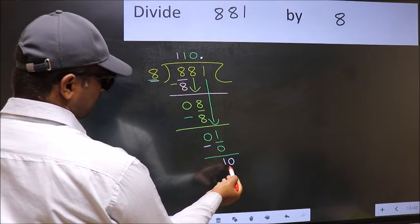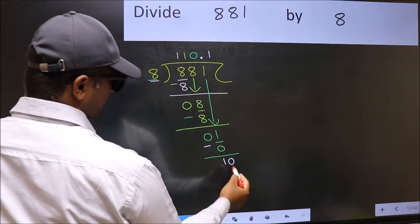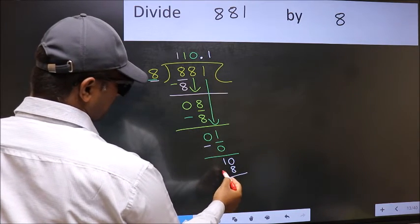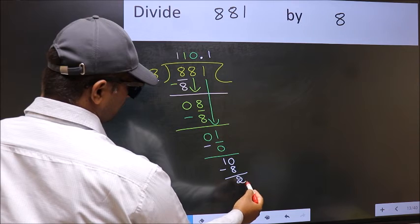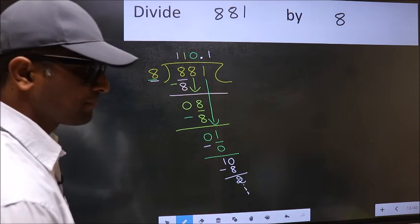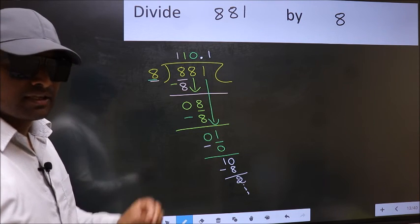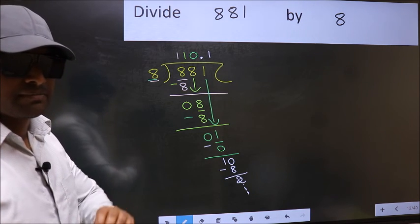So 10. A number close to 10 in the 8 table is 8 once, 8. Now you subtract, we get 2. And continue the division. I am not doing that. Did you understand where the mistake happens? You should not do that mistake.